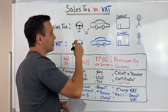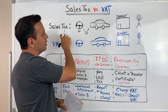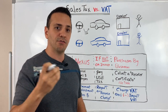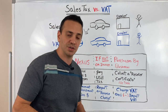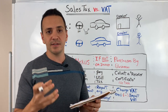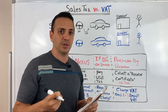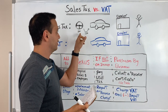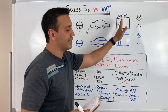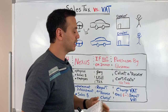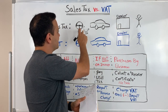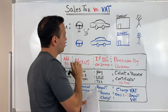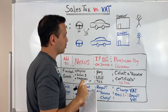Rather than adding sales tax to it, what they do is they obtain a reseller certificate from the car manufacturer, basically saying that this steering wheel is purchased for the purpose of reselling it — they'll take it, add it to the vehicle, and then resell it. So once they have that reseller certificate, they can issue an invoice at $100 to the car manufacturer.